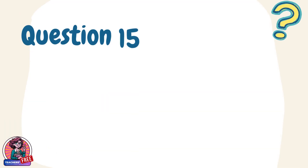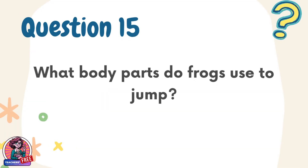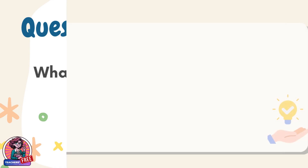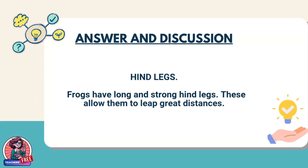Question 15. What body parts do frogs use to jump? Answer: Hind legs. Frogs have long and strong hind legs. These allow them to leap great distances.